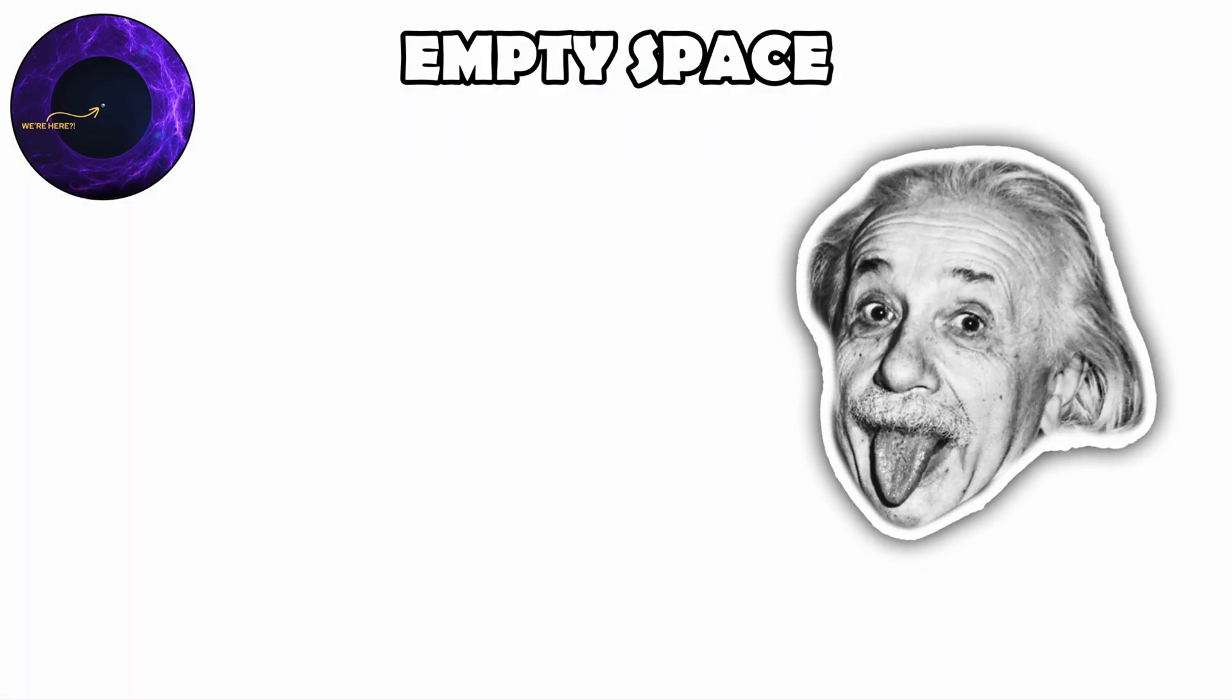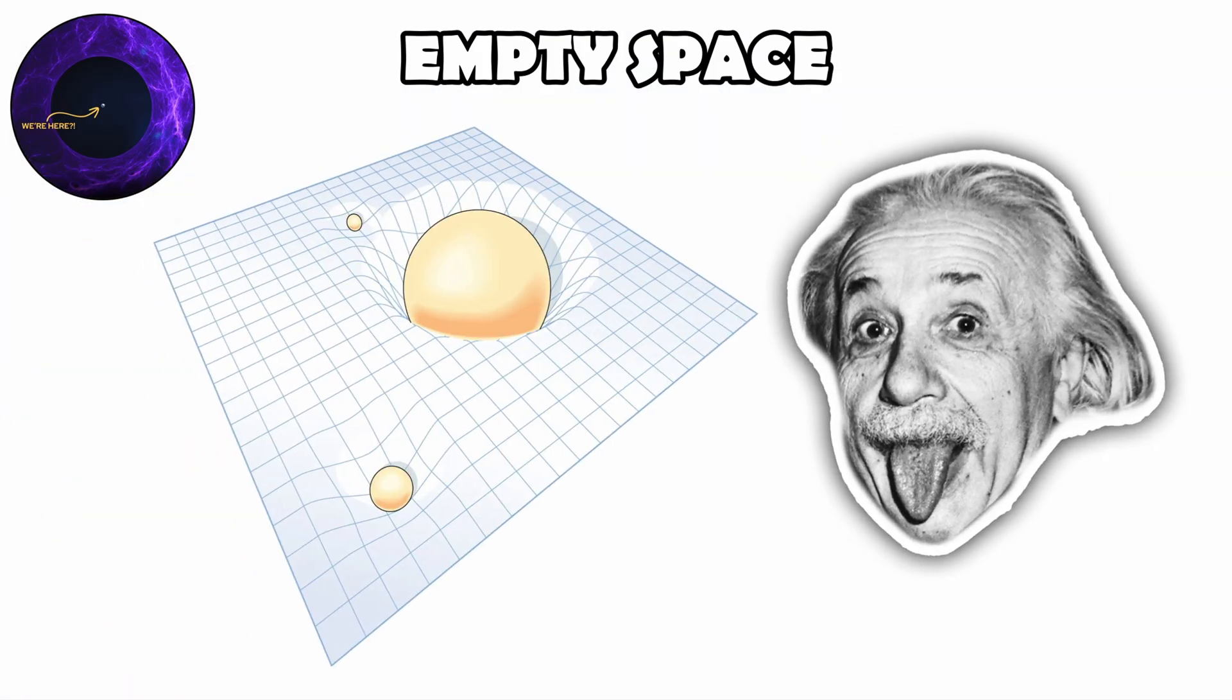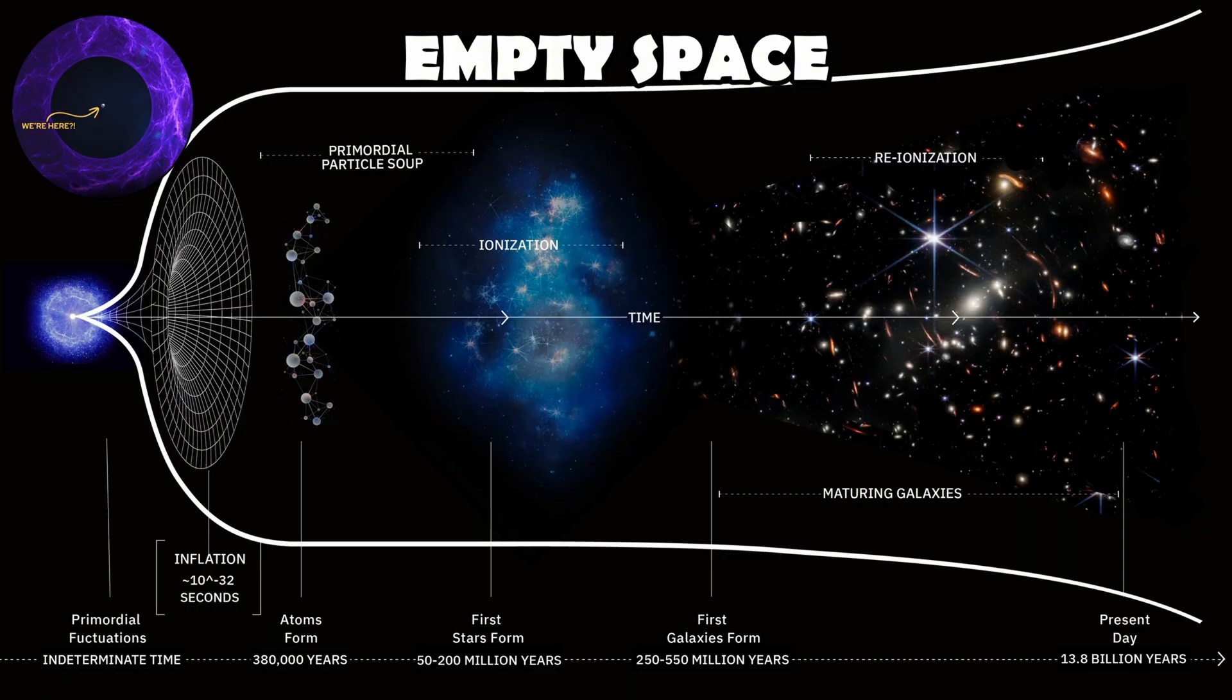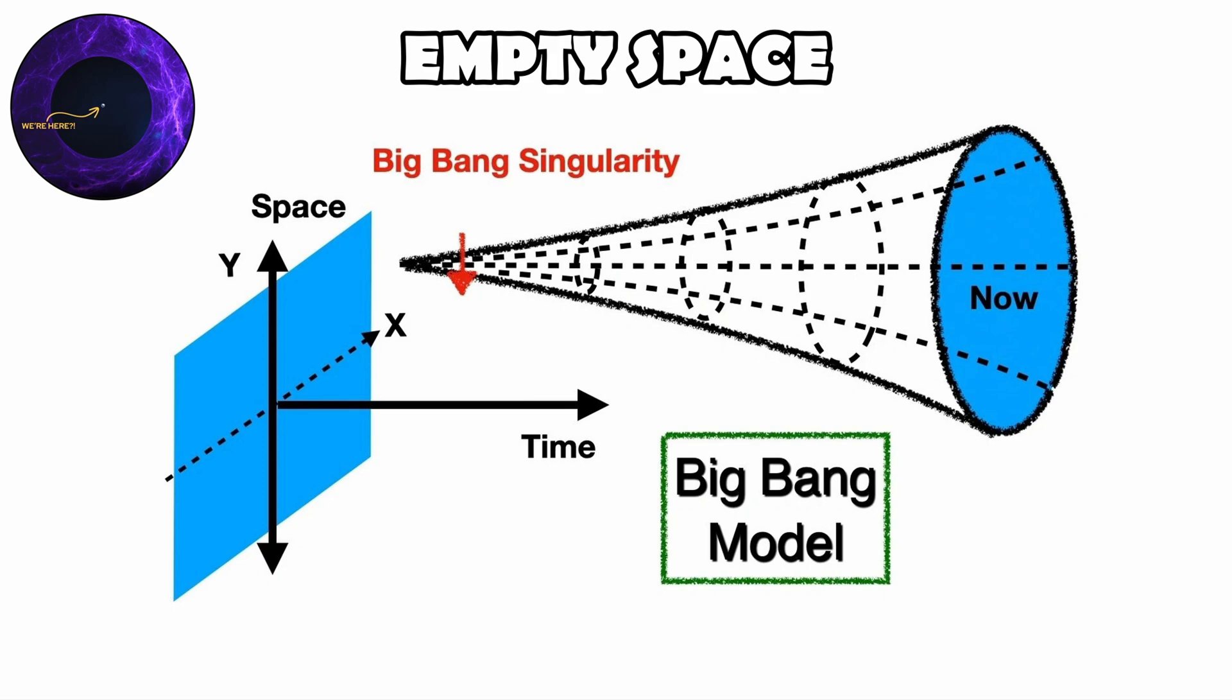In general relativity, matter tells space how to curve, and space tells matter how to move. At the Big Bang, both the geometry of space and the material within it emerge together. This is why scientists describe the Big Bang not as an explosion in space, but as the origin of space-time itself.